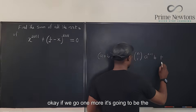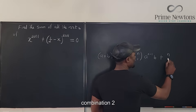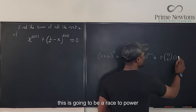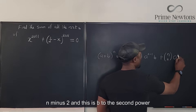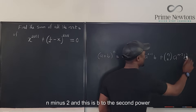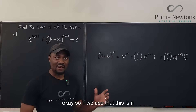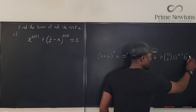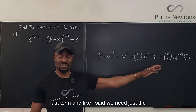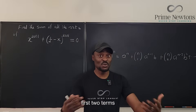If we go one more term, it's going to be n-choose-2, which is a raised to power n minus 2 and b to the second power. We keep going until we get to the very last term, but we only need the first two terms.